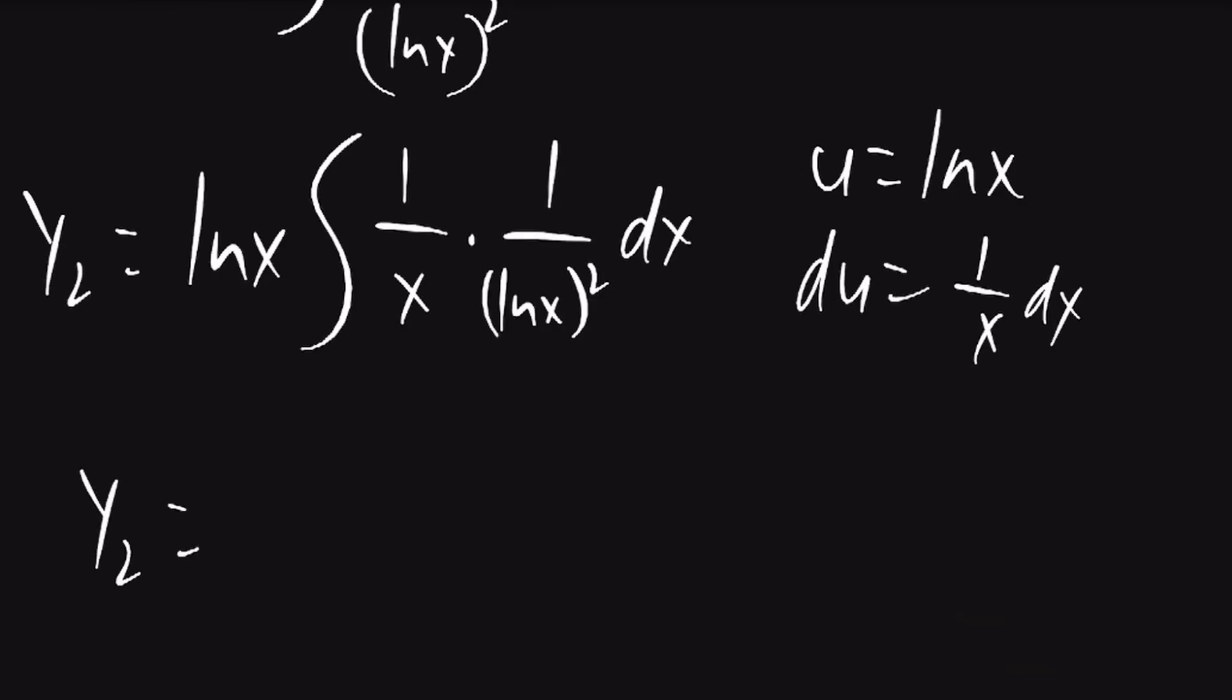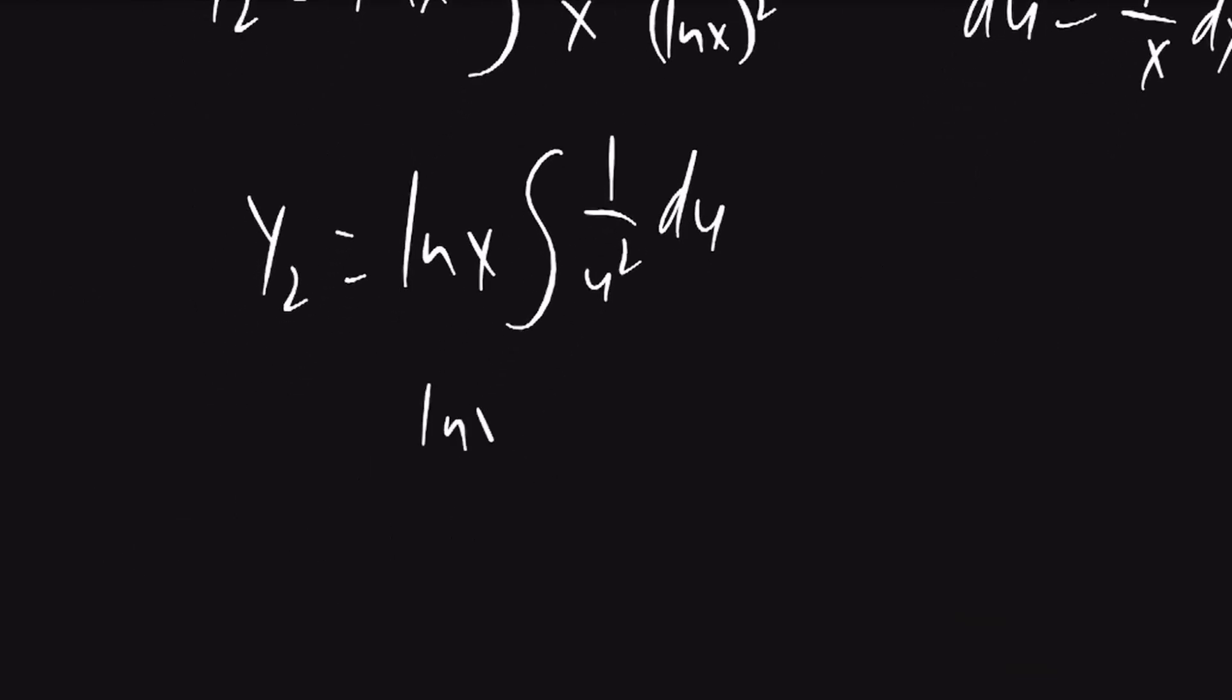So y2 is going to be equal to lnx times the integral of 1 over u squared du, which will be lnx times negative 1 over u.